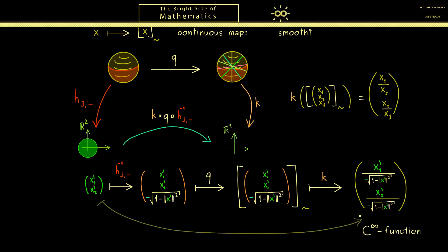Now, in addition, you should see, we can expand this argument here to all the other charts, such that we can cover all the points on S². So in conclusion, we always get a C∞ function out here, such that our canonical projection q is indeed a smooth map between manifolds.